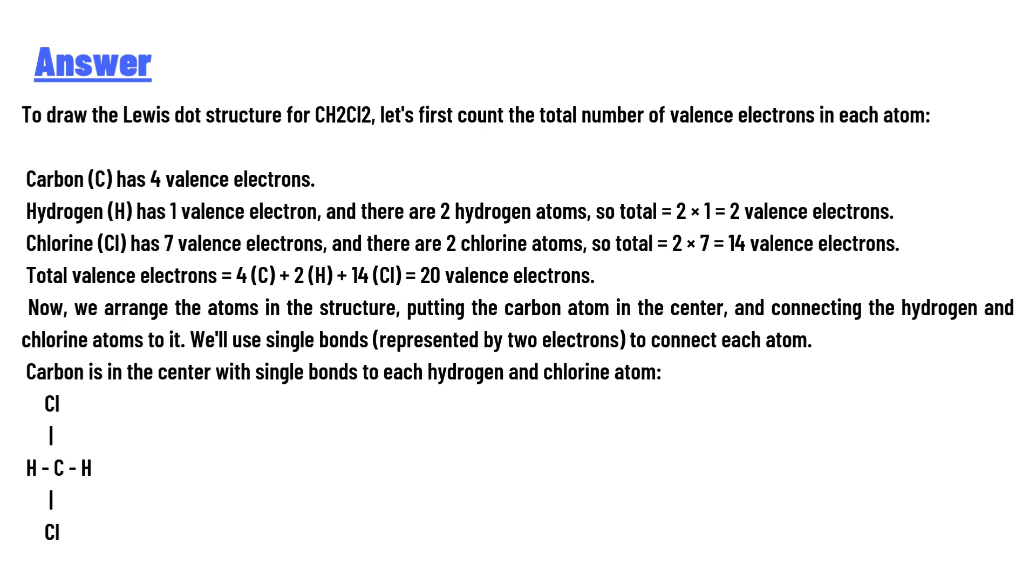first count the total number of valence electrons in each atom. Carbon has 4 valence electrons. Hydrogen has 1 valence electron, and there are 2 hydrogen atoms, so total is 2 × 1 = 2 valence electrons. Chlorine has 7 valence electrons, and there are 2 chlorine atoms, so total is 2 × 7 = 14 valence electrons. Total valence electrons = 4 + 2 + 14 = 20 valence electrons.